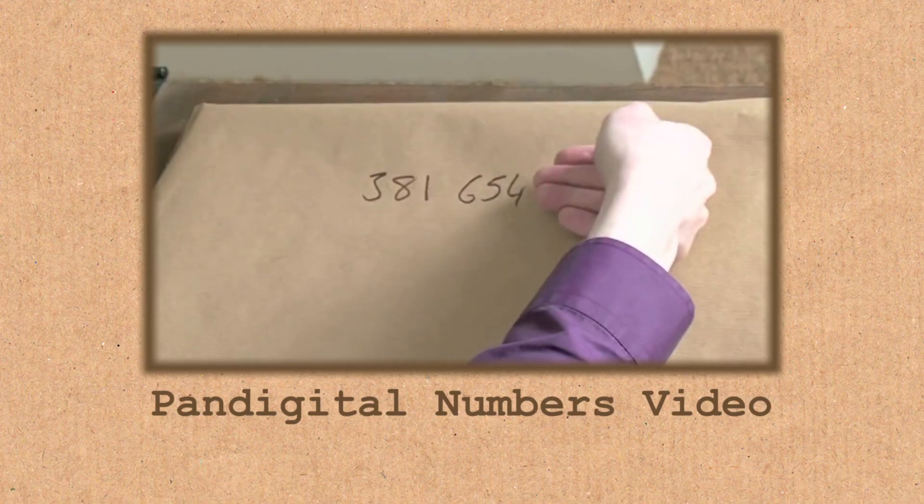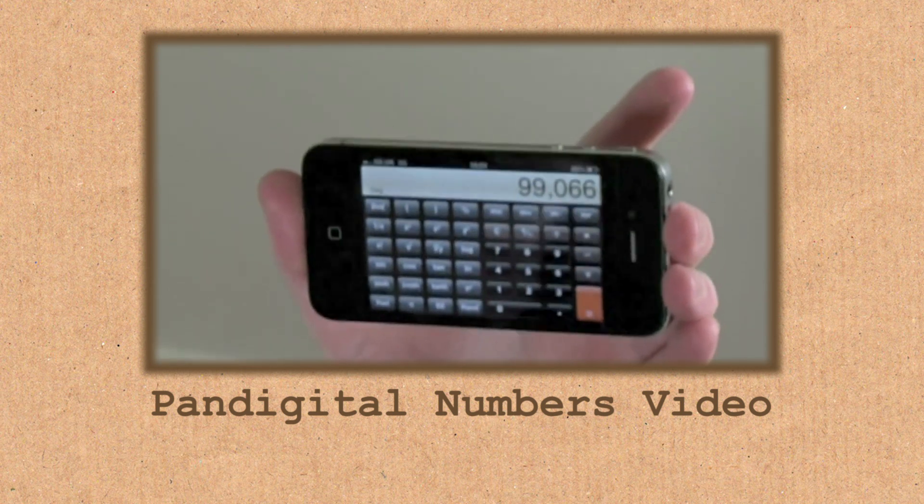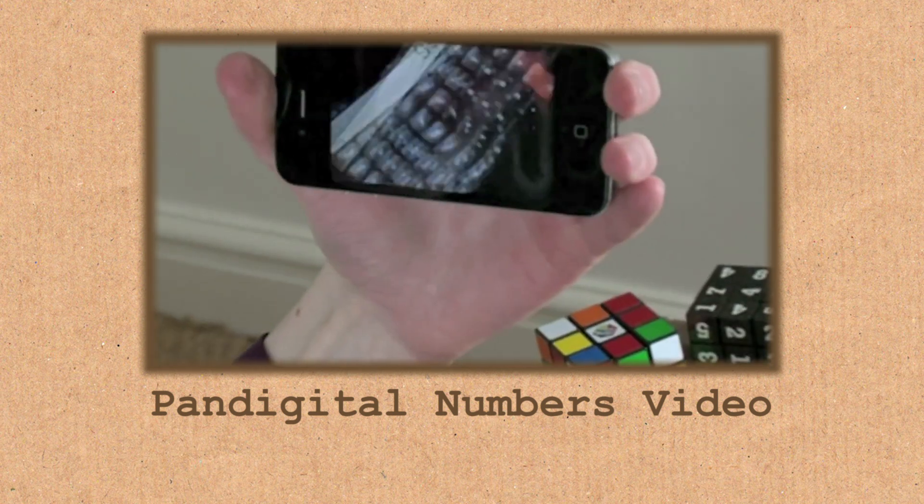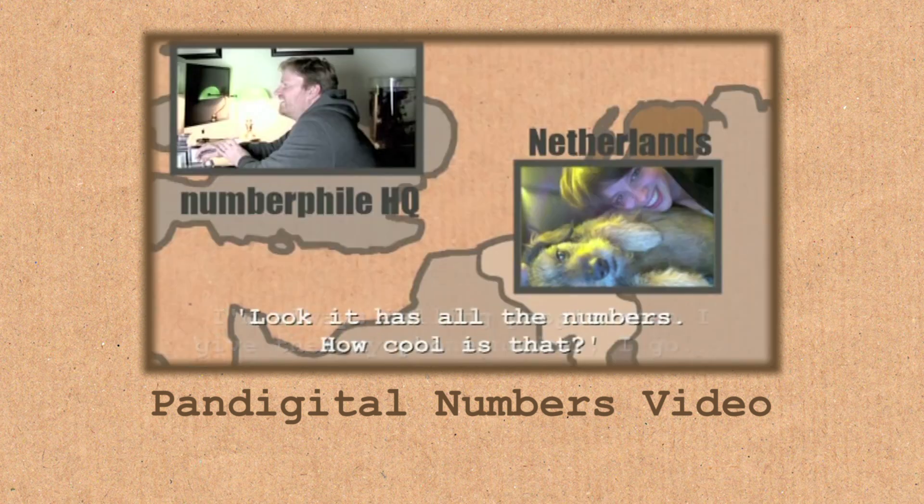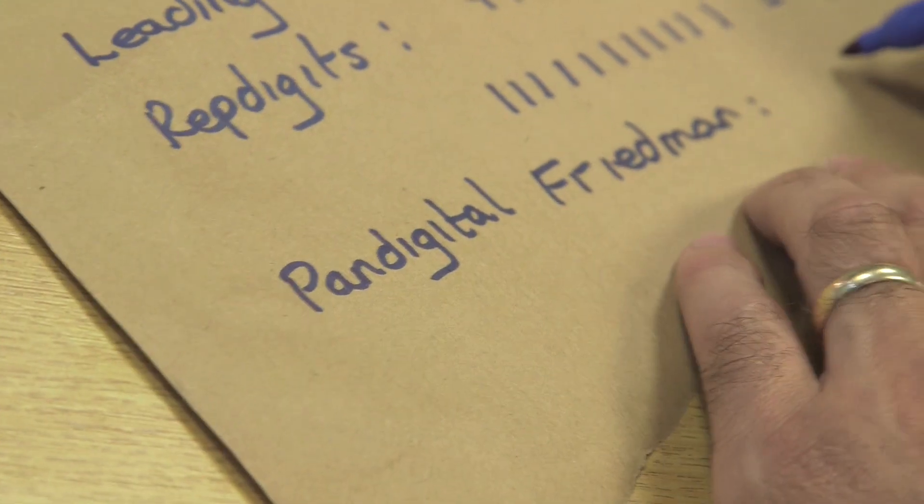But I haven't finished. There's more. How about if I ask the following? There's a set of numbers called pan-digital. We have covered pan-digital numbers. But you haven't done pan-digital Friedman numbers, I bet. Here's one. So a pan-digital number is the one that includes all the numbers in any given base.